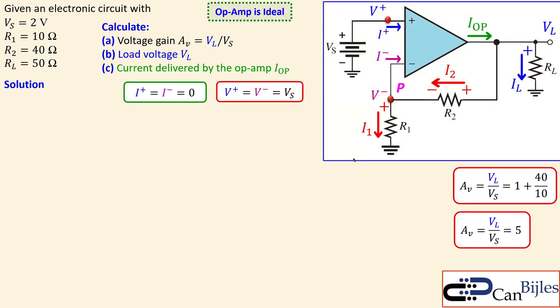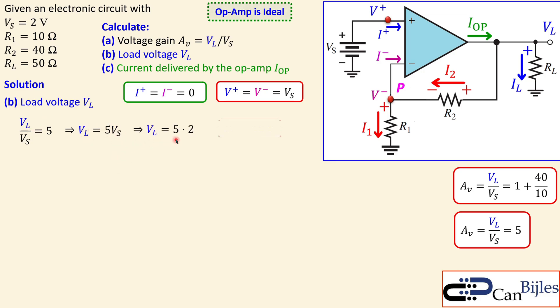Now for the load voltage: since VL/Vs = 5 and Vs = 2 volts, we get VL = 5 × 2 = 10 volts. So there are +10 volts at the output node.